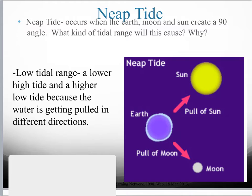So what moon phases will neap tides occur at? This would be a quarter moon — the first quarter or the third quarter, also known as the last quarter. You can think of it as cutting the back half of the moon off because you can't see that back half, and the sun angle is coming from this direction, so this side would be the dark side, leaving you with a quarter of the circle — a quarter moon.